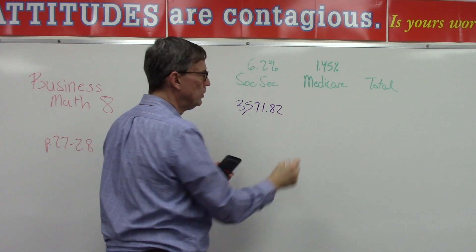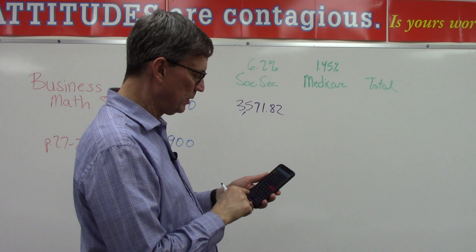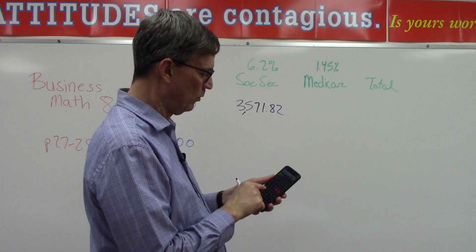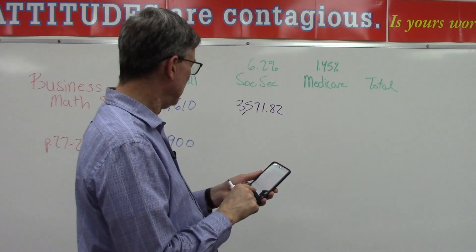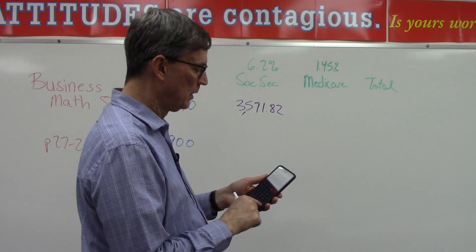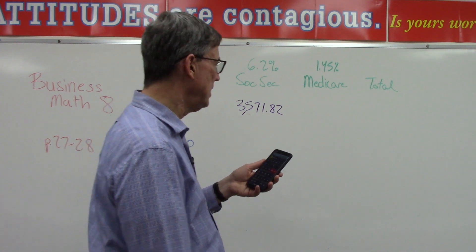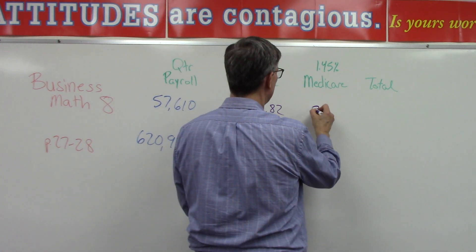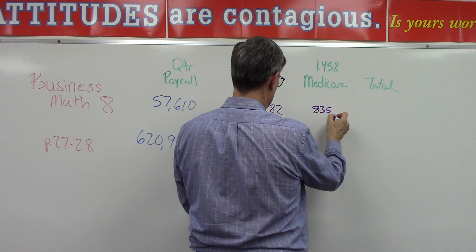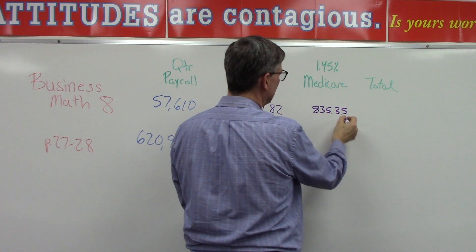Okay, now let's take the 0.0145 times $57,610, and you should be doing this with me here. So we get $835.35—we have to round it off.